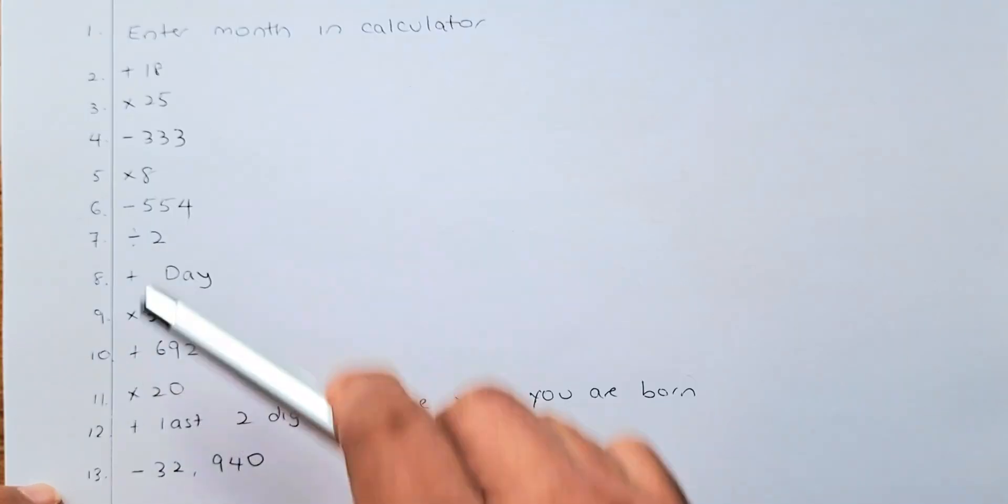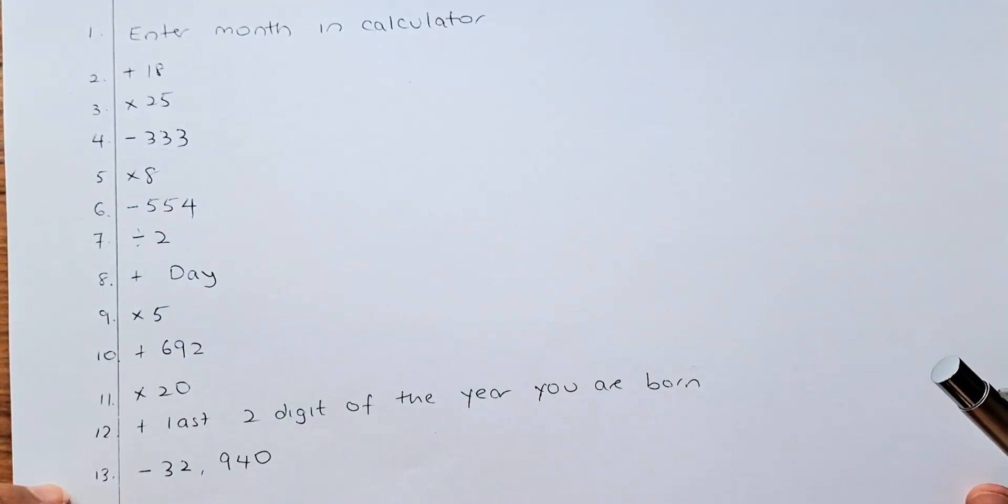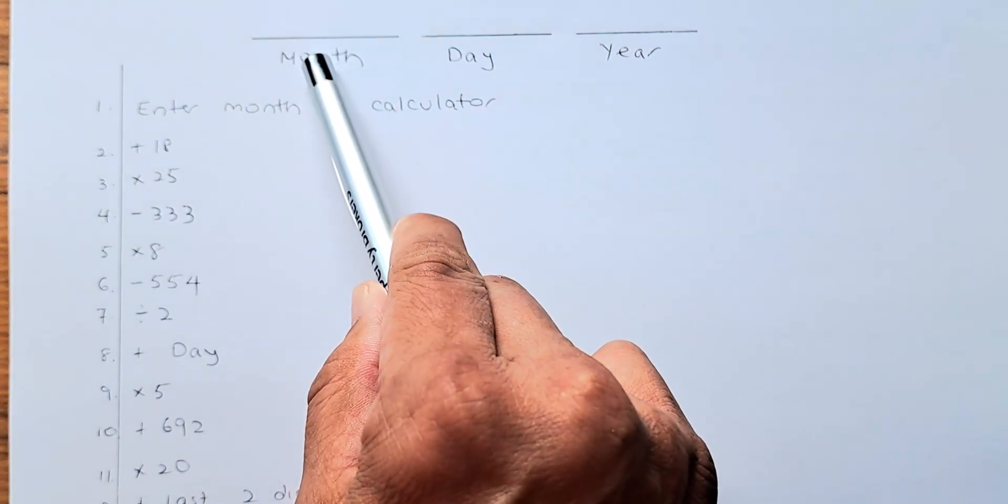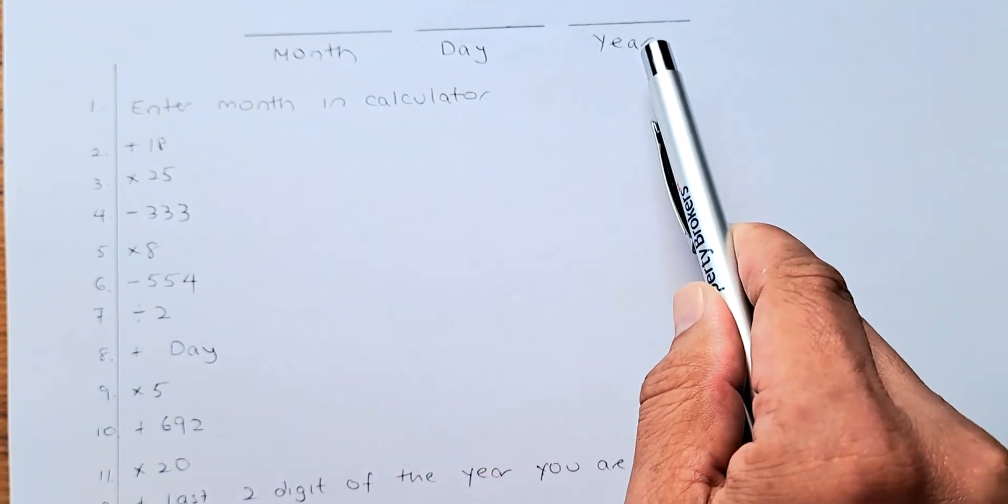So, these are the 13 steps you need to do. And you will get the answer in terms of month, your day, and your year.